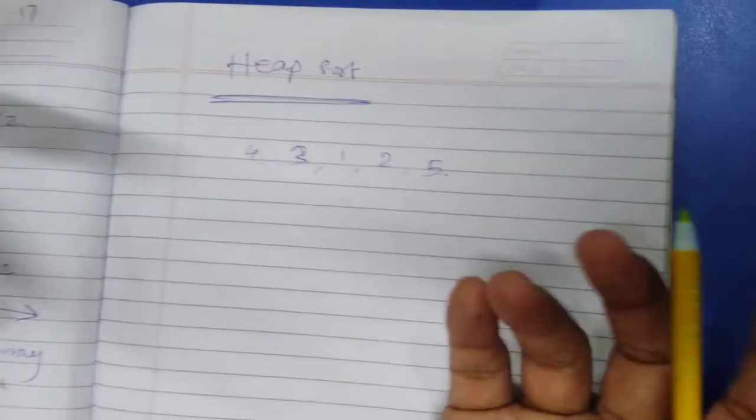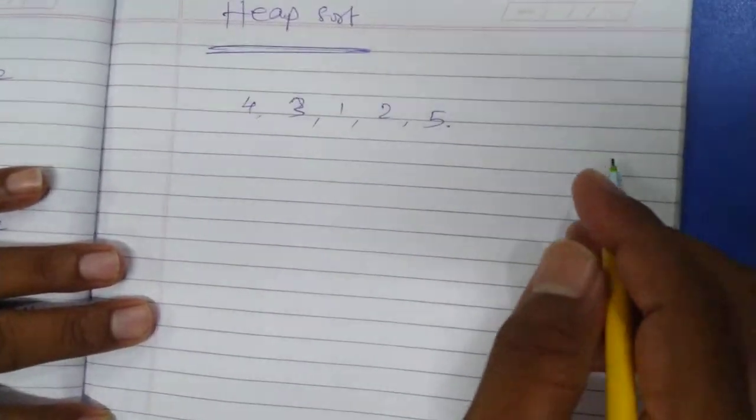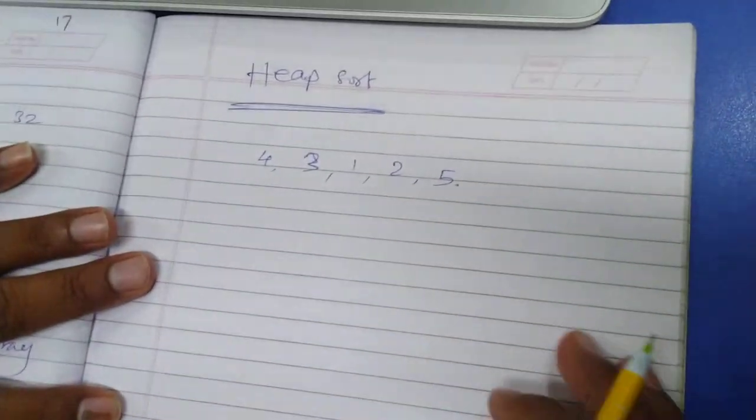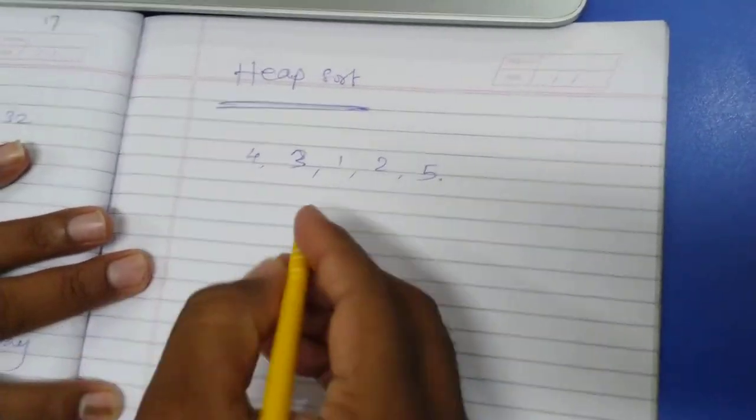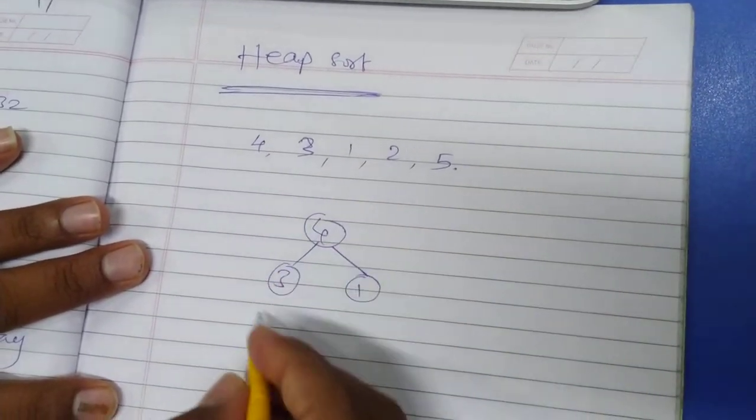This is the example given to you. What do we need to do now? We need to show the source in the circle. Before that, we need to convert these elements into a binary tree. How to design a binary tree, you know. Just place all the elements the way they enter into the list.